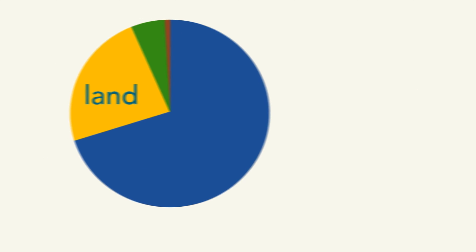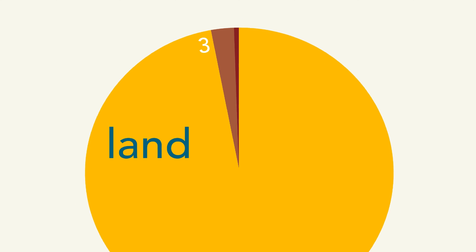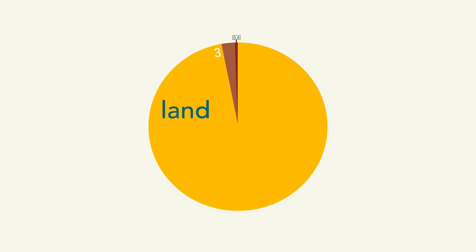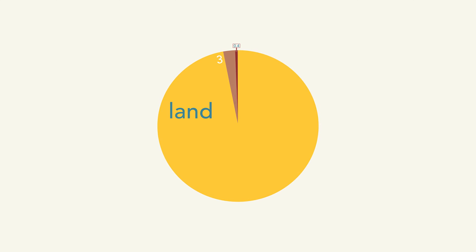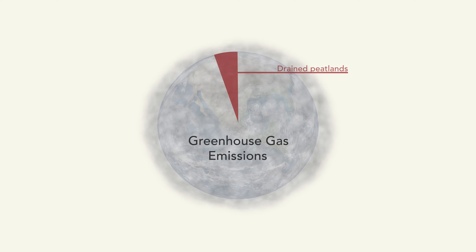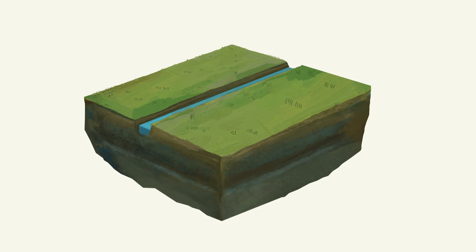What is the current state of peatlands worldwide? Worldwide, only 15% of peatlands have been drained, which is about 0.4% of the global land surface. However, this today causes 5% of all man-made greenhouse gas emissions. The majority of the world's drained peatlands are used for agriculture.